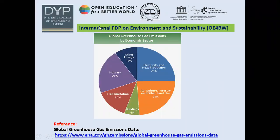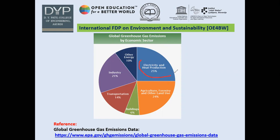Before designing sustainable homes, let us see how global greenhouse gas emissions by economic sector explain why we are focusing on smart home design. Electricity and heat production accounts for 25% of greenhouse gas emissions, and agriculture, forestry, and other land uses account for the next largest portion. So the majority of greenhouse gases are generated from heat and electricity, meaning we need to work on electricity use across industry, homes, and all those areas.